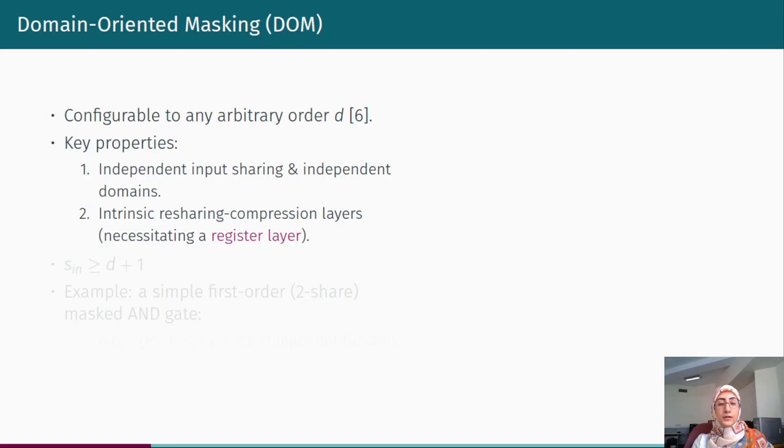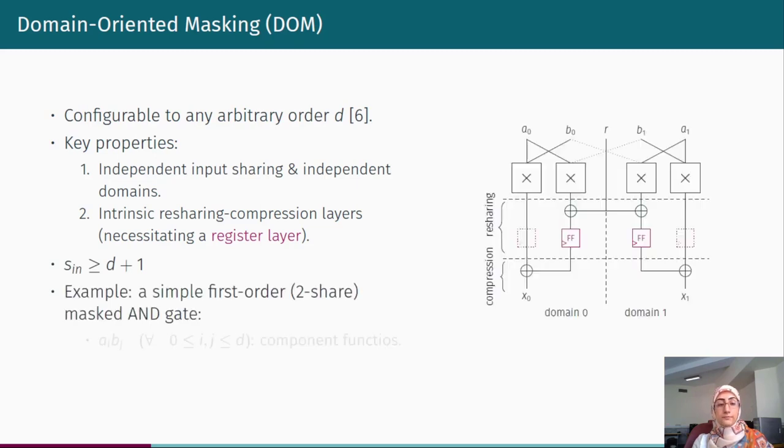The application of a refreshing layer followed by a compression layer necessitates hiring of a register layer at the middle to avoid glitch propagation. And this refreshing layer as well as the independence property leads into d plus 1 as the minimum number of input shares rather than td plus 1. An example would be the first-order domain-oriented masking implementation of AND gate in which all AIPJ multiplication terms are called component functions. This is important since later in our design we will refer to component functions frequently.